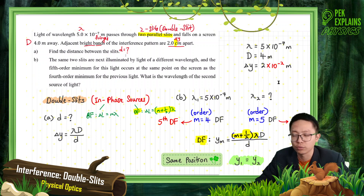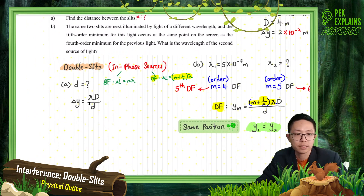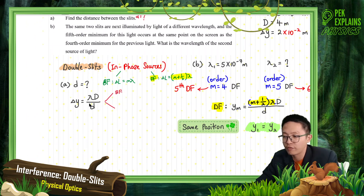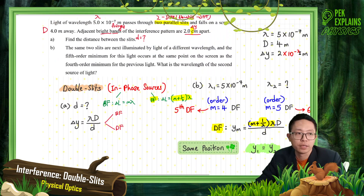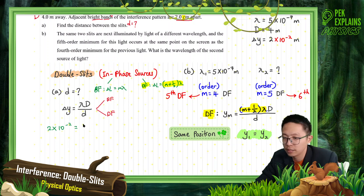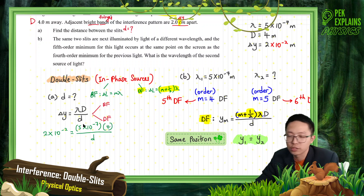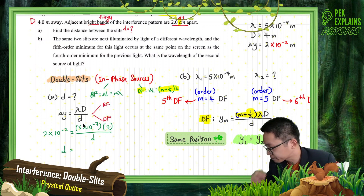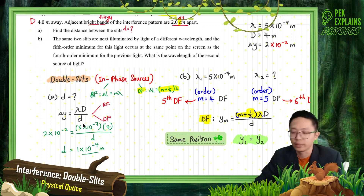This ΔY is the same for both bright fringe and dark fringe — the separation between bright fringes equals the separation between dark fringes. So the formula ΔY = λD/d can be used for both. Just substitute: ΔY = 2×10⁻² m, λ = 5×10⁻⁷ m, big D = 4. Solving for small d, I get d = 1×10⁻⁴ m.